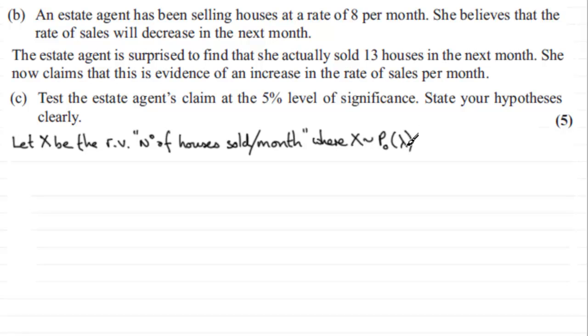What we're assuming is that the null hypothesis H₀ is going to be lambda, the mean, is equal to 8. But we see that in the following month 13 houses are sold, so that's more than the mean rate. So it seems as if the mean rate has increased, so we'll put the alternative hypothesis H₁ is that lambda, the mean rate, is now increased from 8, it's greater than 8.